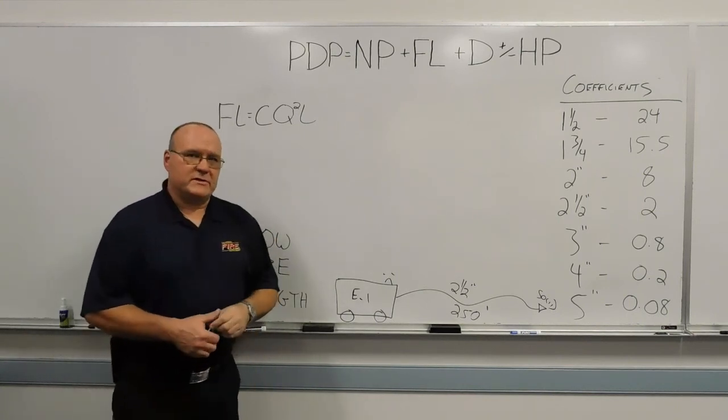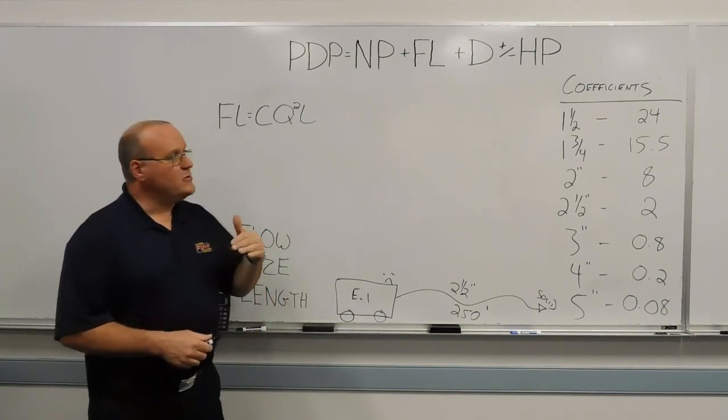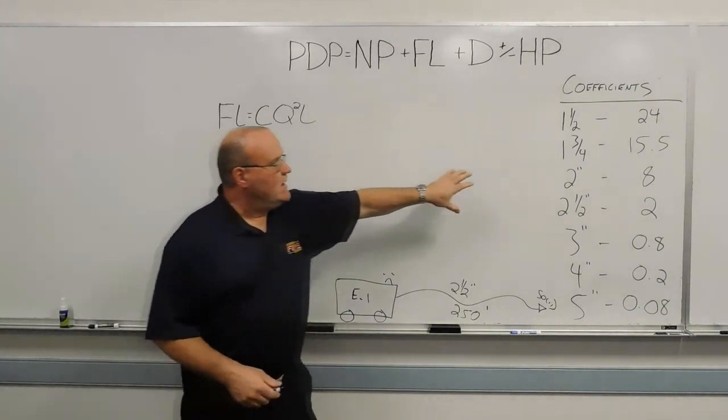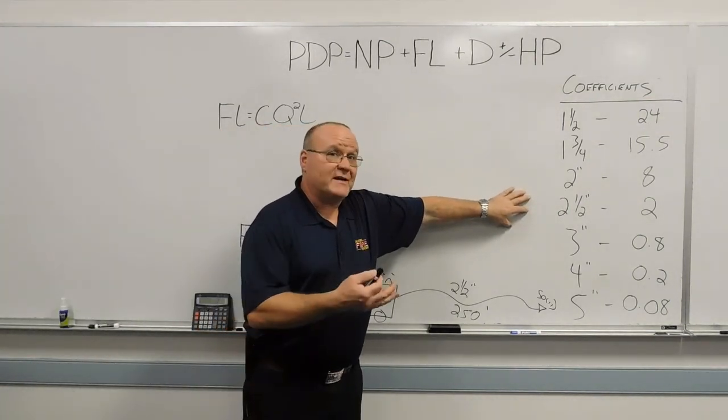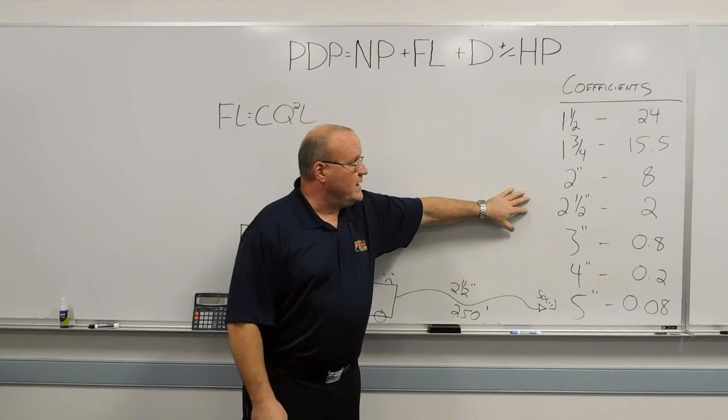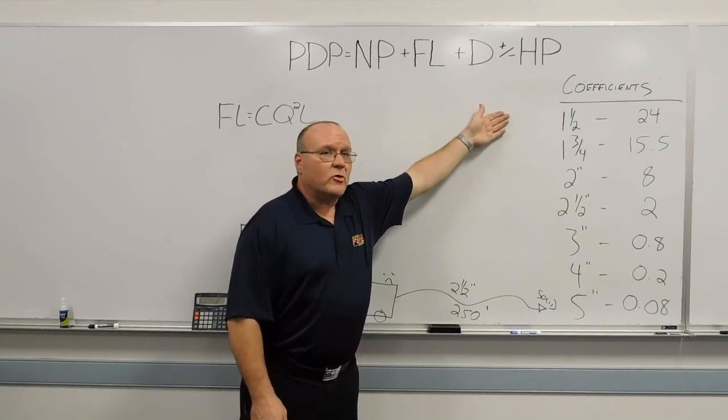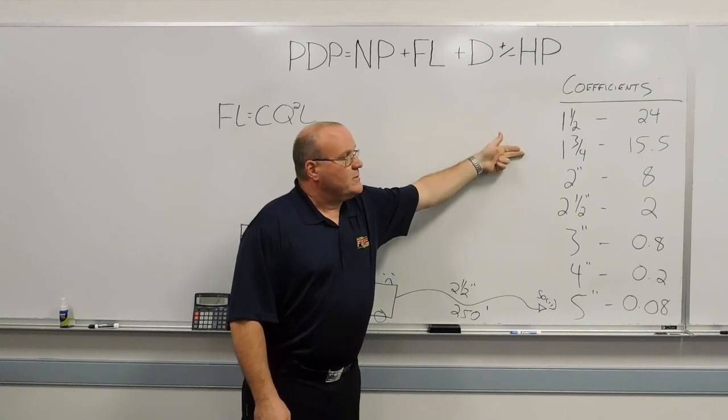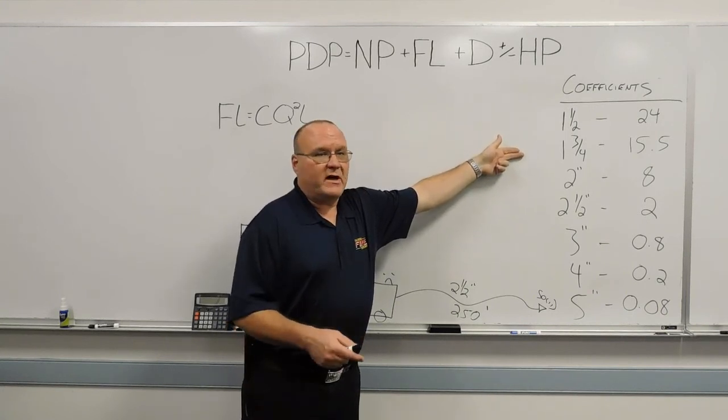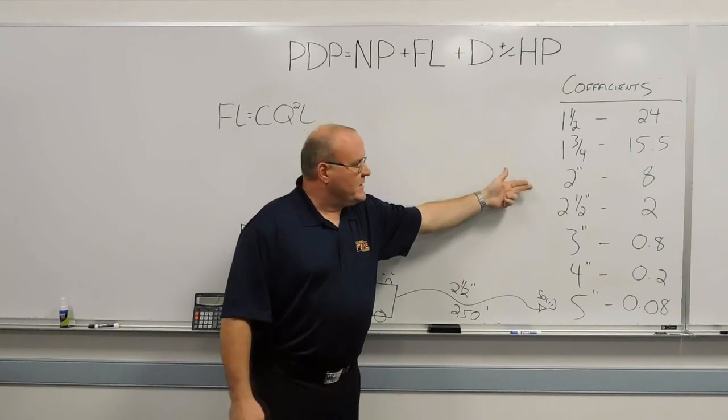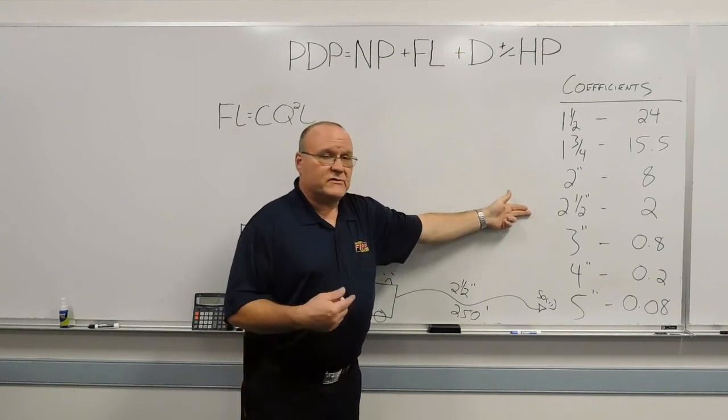As far as the coefficients, if you use some preset numbers, these are some generic coefficients that came out of most texts. The IFSTA text or the NFPA text. Inch-and-a-half hose, the coefficient is 24. Inch-and-three-quarter, the coefficient is 15.5. The two-inch hose is 8. Two-and-a-half-inch hose is 2.